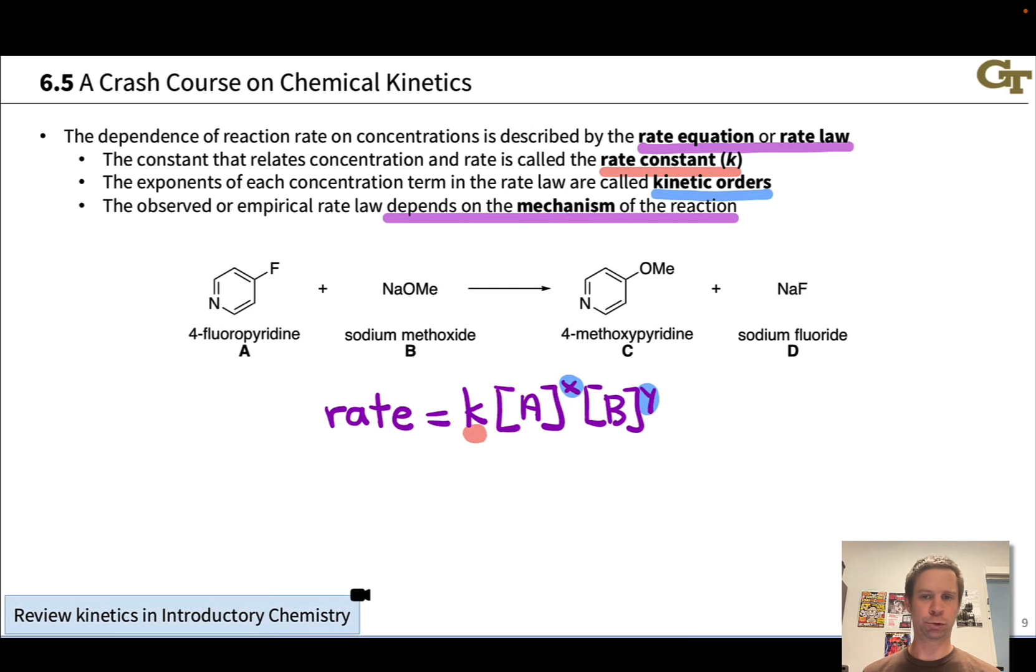Just to talk about this in general terms, I wanted to give you an example of an organic reaction, A plus B going to C plus D here, and talk about how the mechanism might relate to the rate law. What's happening here is the displacement of fluoride by the methoxide anion. Sodium plus is pretty much just a spectator. Methoxide anion comes in and kicks off the fluoride more or less, and we get product C, and sodium fluoride D is a byproduct. That's one way we could envision this happening, with methoxide coming in as fluoride departs.